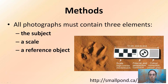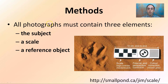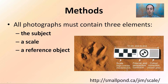Starting with general methods: all photographs must contain three elements — the subject, a scale, and a reference object. We have a prime example of the footprint here with a nice scale and a reference object. There's a website included at the bottom, active at the time of recording, that allows you to print out something like this to include in any images you take or want to practice with. It's a great way to have color correction, size, scale, and contrast.